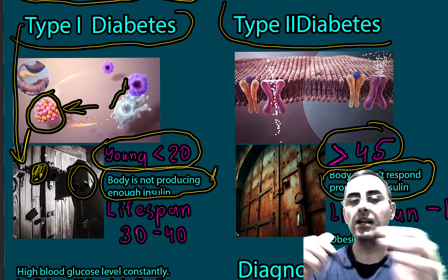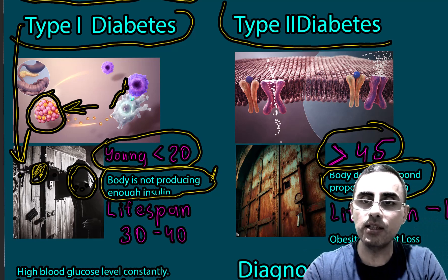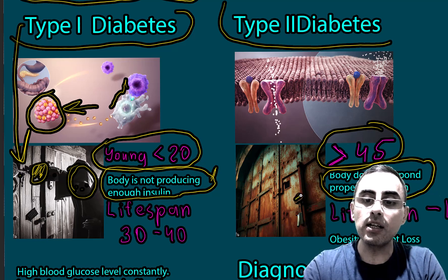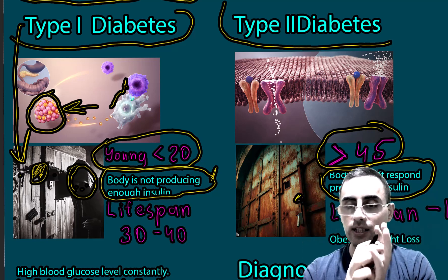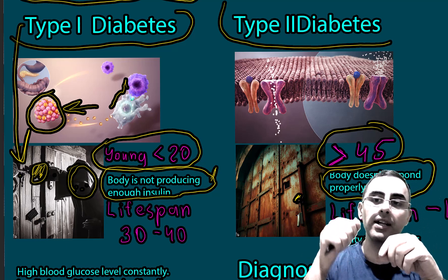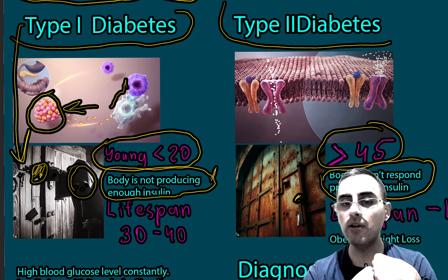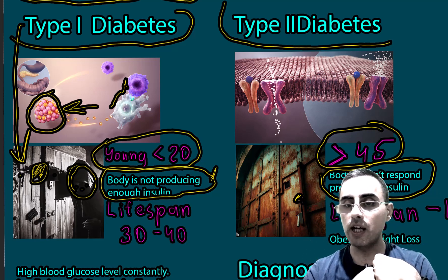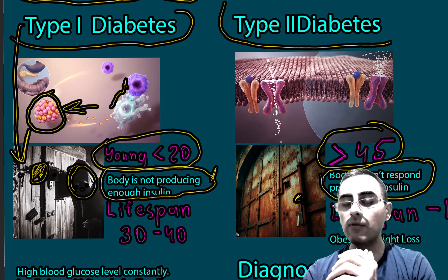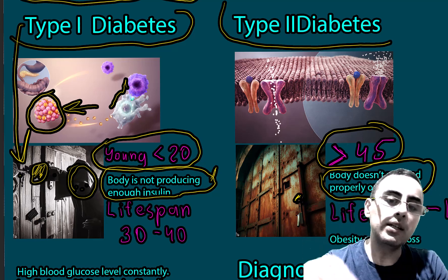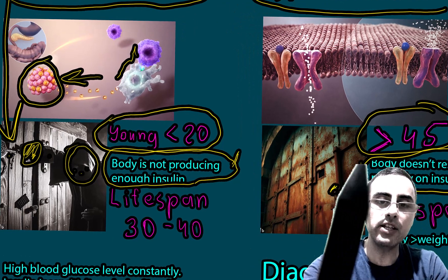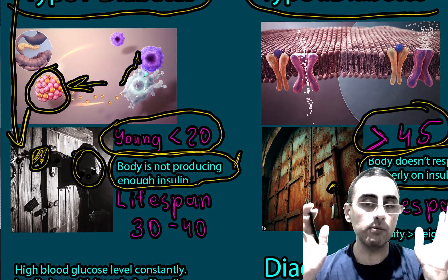In Type 2 diabetes, we have the key, but the door is rusty and difficult to open. We need to try several keys to open the door because it is old and does not respond properly to our key. We need to try different types of keys.